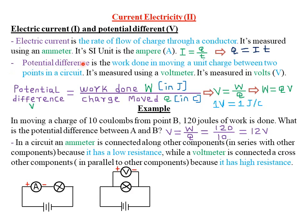Next we look at potential difference, which refers to the work done in moving a unit charge between two points in a circuit. The word 'unit' here simply means one — so we are talking about the work done in moving only one charge between two points. Potential difference is measured by an instrument called a voltmeter, and its SI unit is the volt, denoted by capital V.